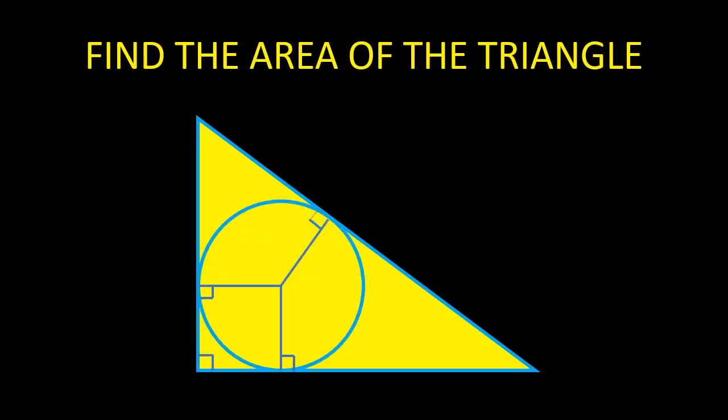A circle with radius r is inscribed in the triangle. If the hypotenuse is divided into two parts at the point of tangency so that one part is 3 and the other part is 5, find the area of the triangle.